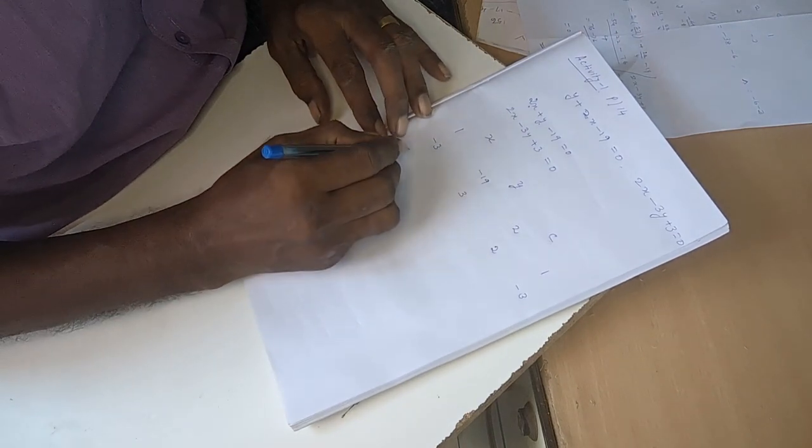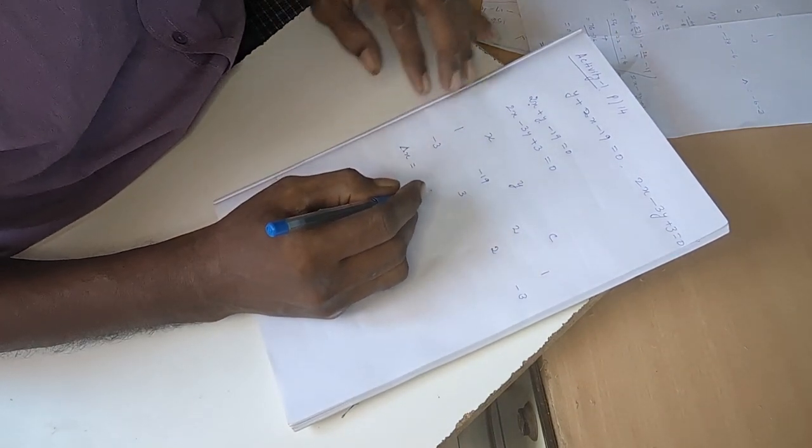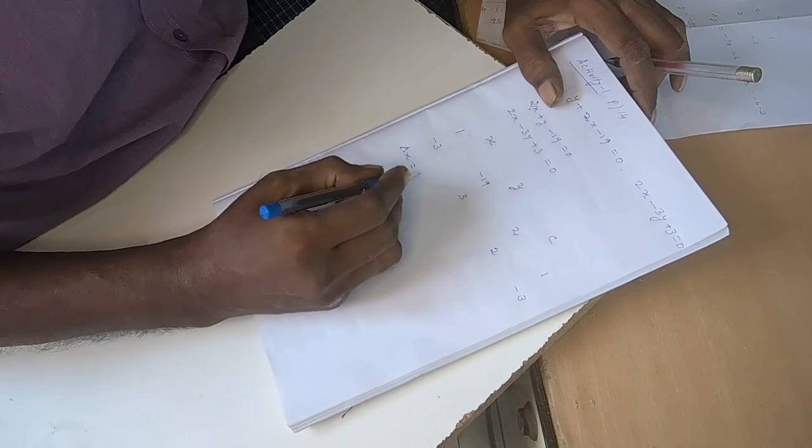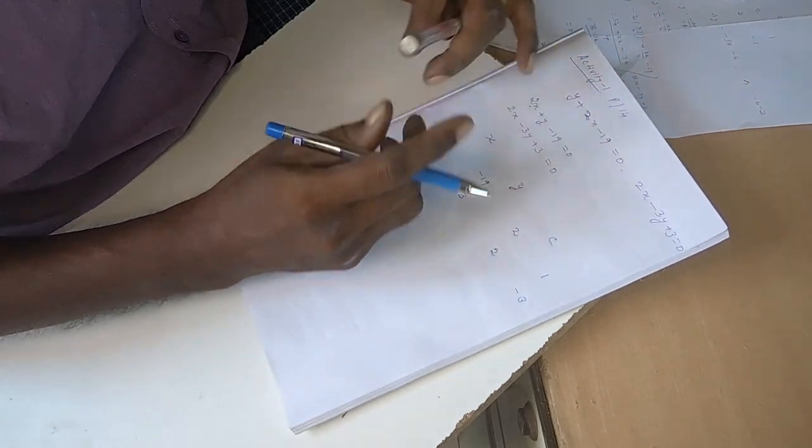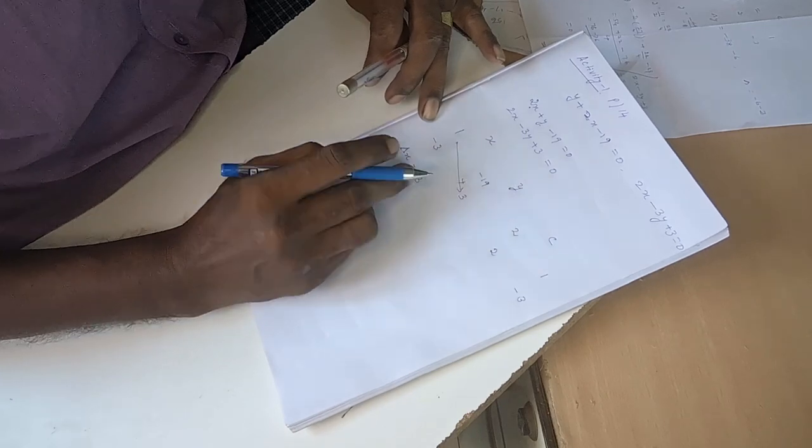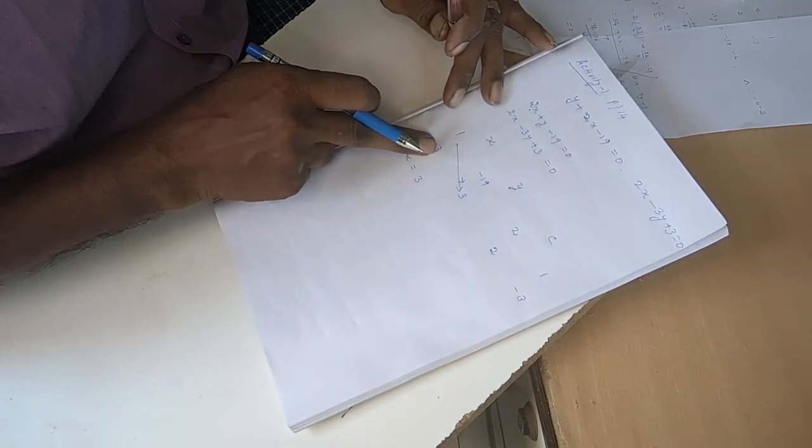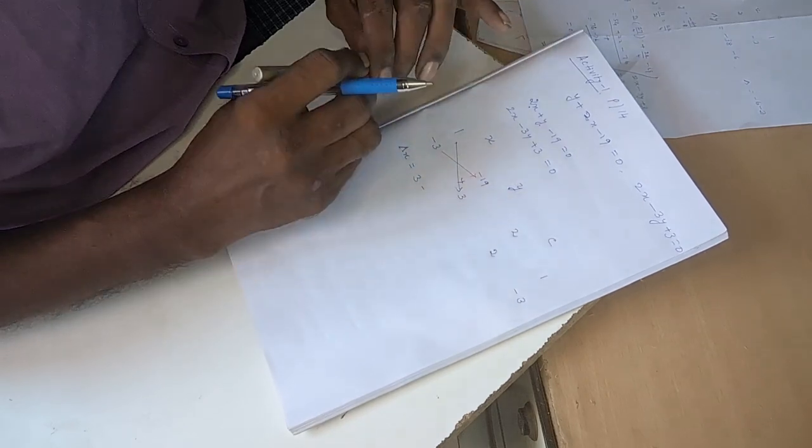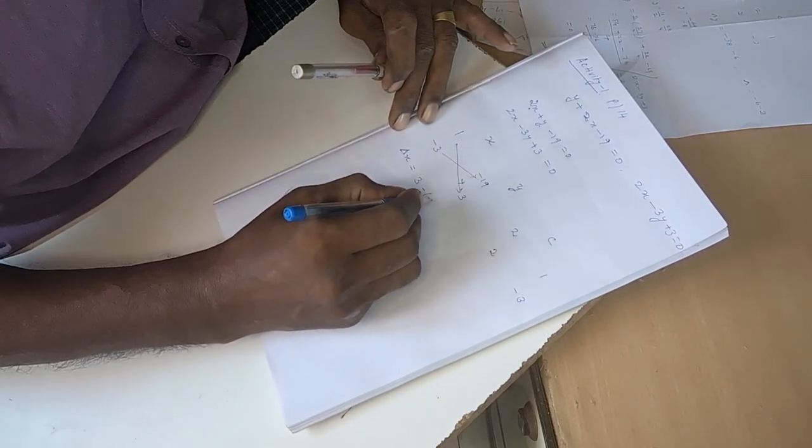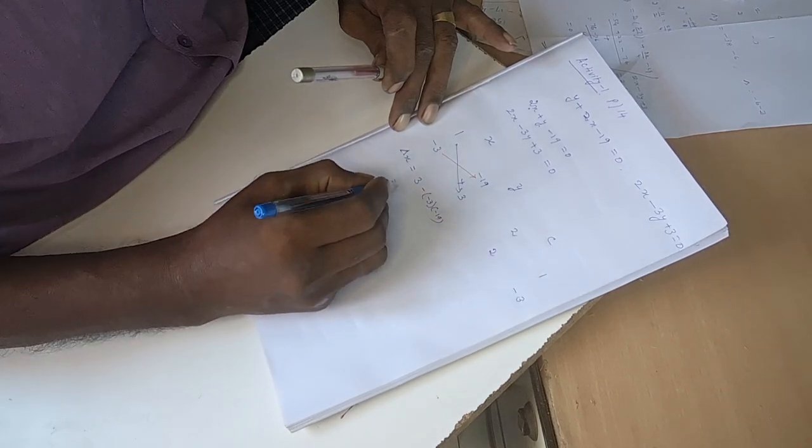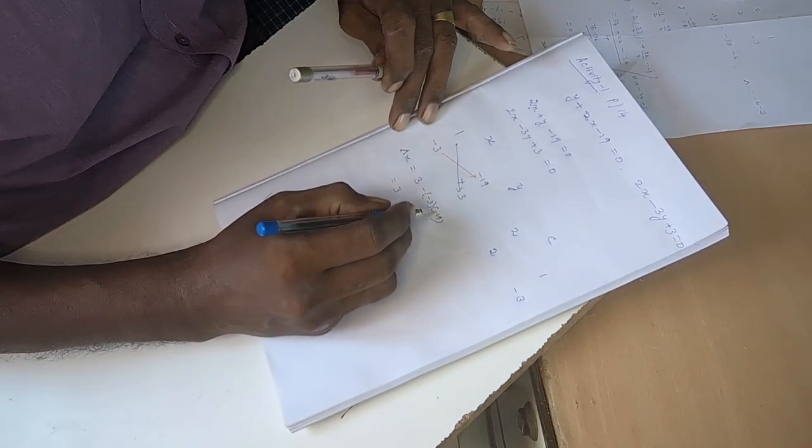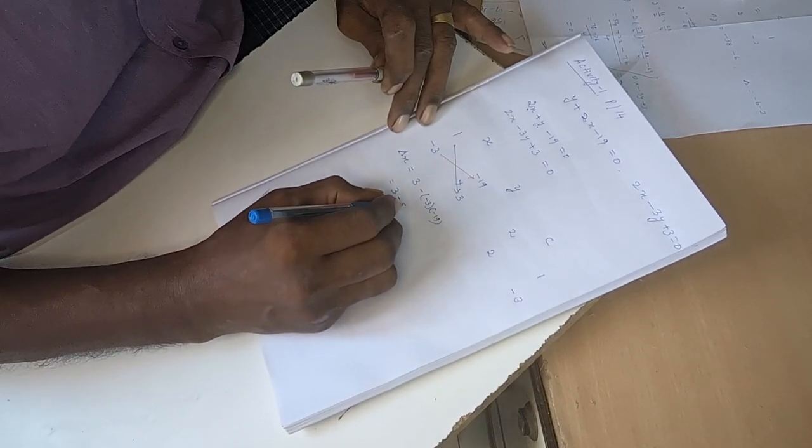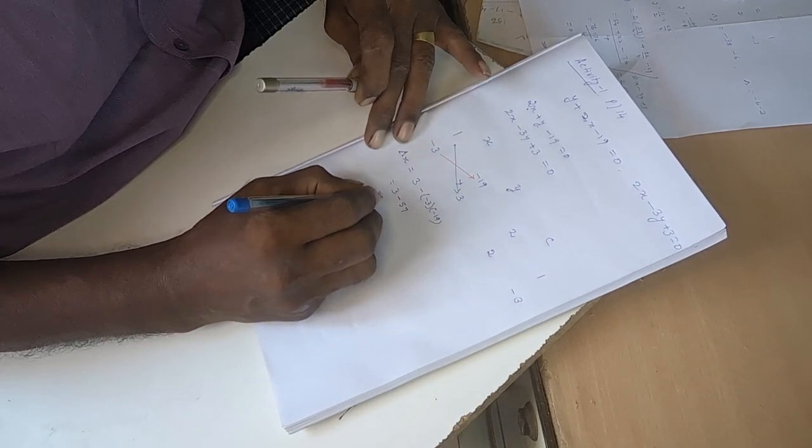So first we find delta x value. Delta x is, we have to multiply this first, top to bottom: 1 into 3 is 3. If you multiply this down to up, the sign is minus. Here itself we have minus 3 and minus 19, so 3 odd number of negative signs gives minus. 3 into 19 is 57, so this is minus 54.